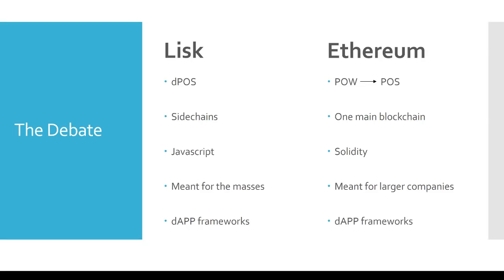So let's talk about a few distinguishing features between Lisk and Ethereum. The first distinguishing feature is the consensus mechanism each uses. Lisk uses a delegated proof of stake mechanism, which basically means that anybody who holds Lisk coin gets to vote for delegates. In Lisk's case, there are 101 delegates who secure the Lisk network and decide when there should or should not be changes to the core code. The advantage of delegated proof of stake is that instead of asking everybody who owns Lisk coin to vote on a change, they just poll the delegates and can get things done a lot faster.